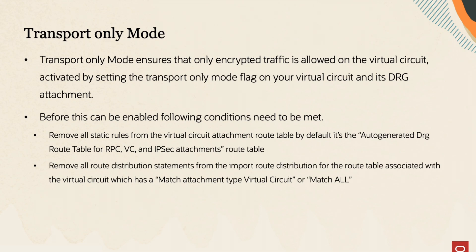IPsec over FastConnect also supports transport-only mode, where customers can enforce encryption on the FastConnect, meaning only encrypted traffic will be allowed. To enable this option, multiple conditions need to be met. First, make sure there are no static routes present on the route table assigned to the virtual circuit attachment. Second, make sure there is no match-all statement for the route distribution associated with this route table. We will go into more detail regarding these restrictions when explaining the flow of traffic.